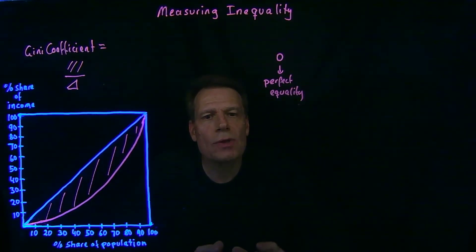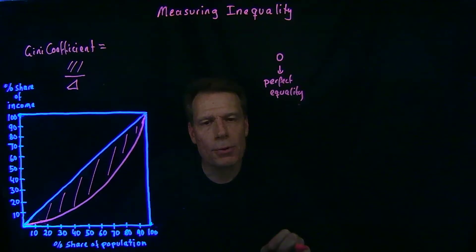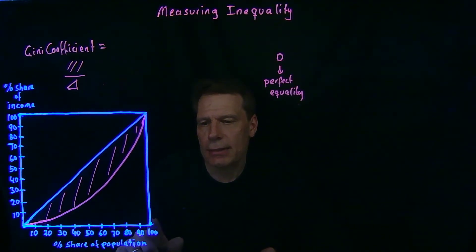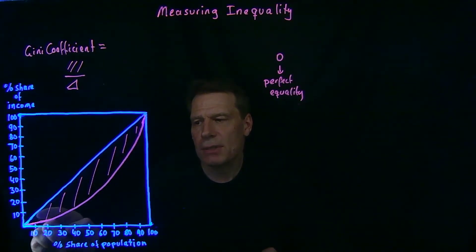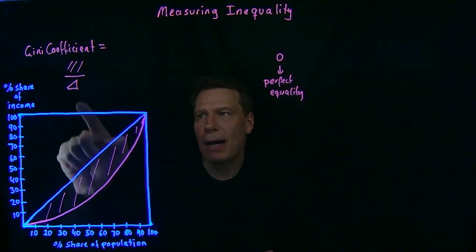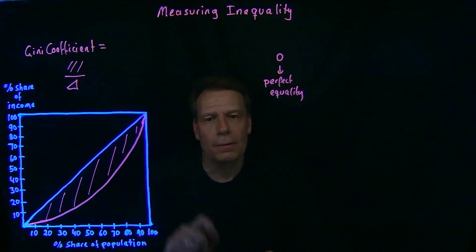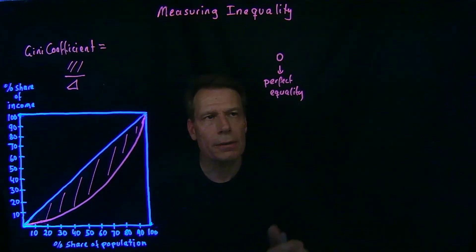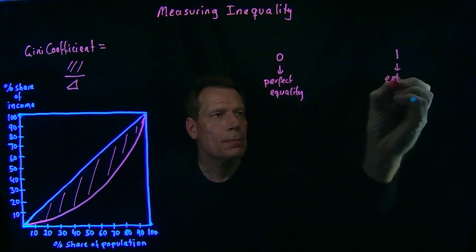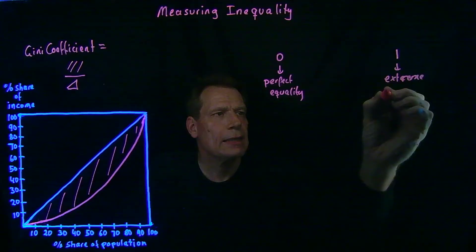Now, what if we had a country with extreme inequality, where a single person gets all the income in the society? Then the income distribution lies on the horizontal axis and shoots up on the vertical axis, so the shaded area becomes the entire area below the diagonal. We would divide the area below the diagonal by the area below the diagonal, which gives us a value of 1. So a Gini coefficient of 1 represents extreme inequality.